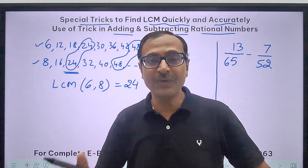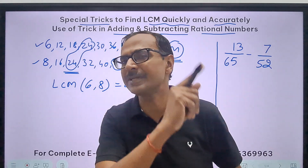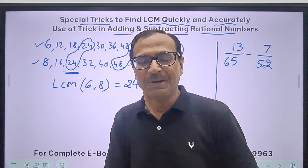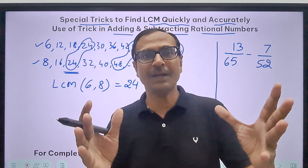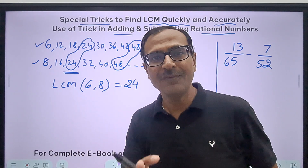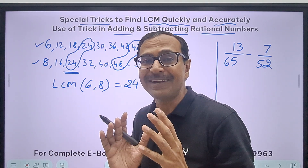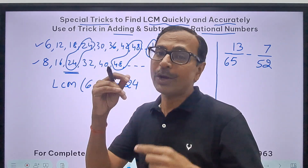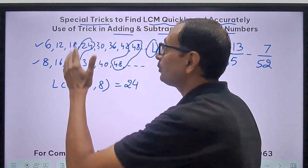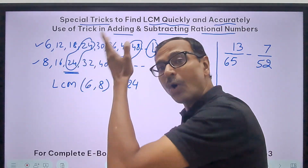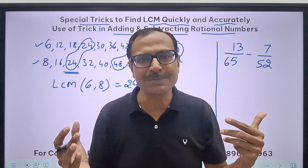Once you understand this concept, you will never be confused between HCF and LCM. The factors of 6 and 8 are never going to be more than 6 and 8, so the HCF is always less than or equal to the numbers. But multiples are never going to be less than the numbers — they will always be equal to or more than the numbers.